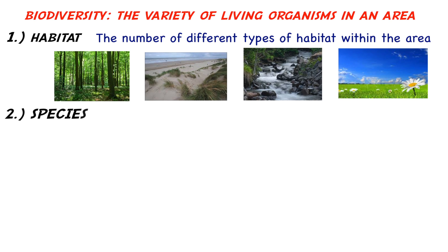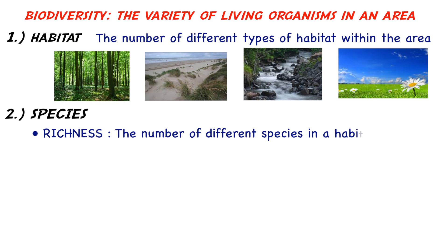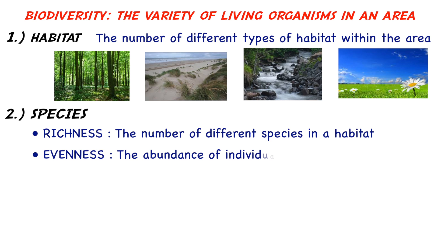Species diversity is considered on two further levels. Species richness is the number of different species in a habitat. Species evenness is the abundance of individuals in each species.